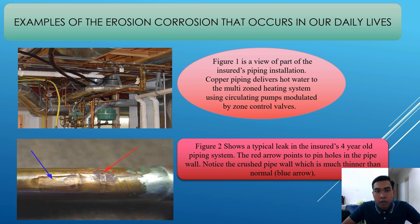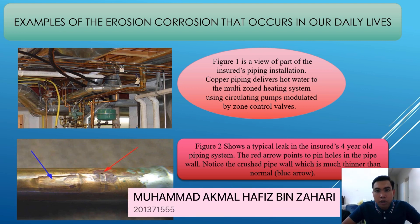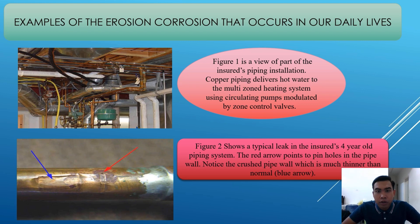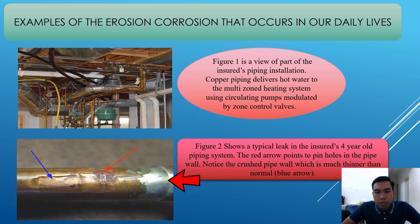For examples of erosion corrosion that occur in daily life: number one shows a view of part of an initial piping installation, using copper piping in a multi-zone heating system with pumps moderated by zone control valves. Figure 2 shows a typical leak for an old piping system. The red arrow points to a pinhole in the pipe wall. Notice the crushed pipe wall, which is much thinner than normal.